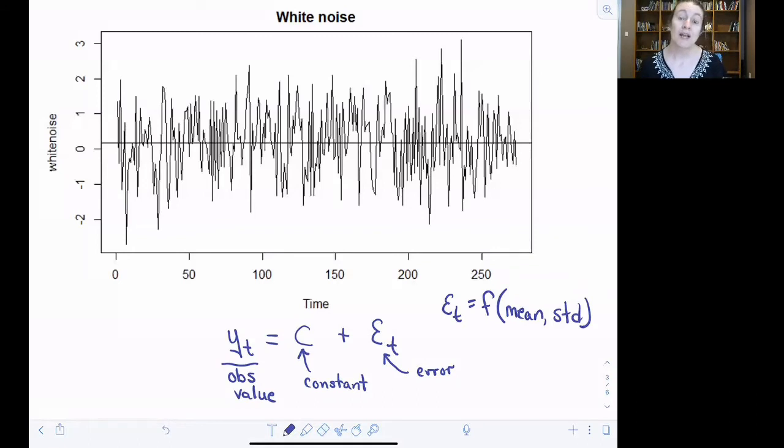The value of that error can change over time. But whatever error value we pull at time t, it is not in and of itself a function of time; it is simply a random pull from a distribution that has a certain mean and a certain standard deviation. By writing the white noise process this way, what we have done is create the simplest version of a time series model. It might not be one that we find very interesting, but it's still a time series model.